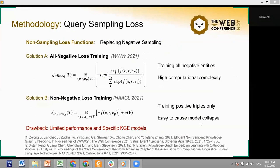Before describing our query sampling loss function, we first introduce two previous non-sampling loss functions in the KGE domain. The first is the all-negative loss. It uses all entities as negative data in each training epoch without sampling operation. And the second is the non-negative loss. It only trains on positive triples and replaces negative training by a global regularization for entity embedding parameters.